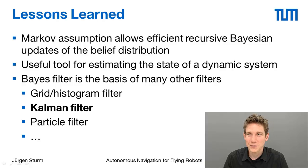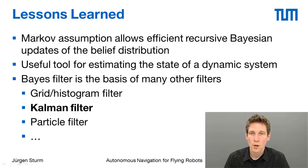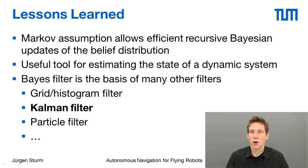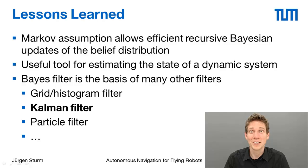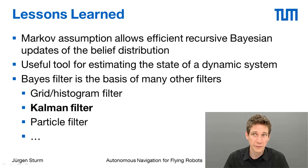To summarize: we have introduced the Markov assumption, which enables efficient recursive Bayesian updates on the belief distribution. It is a very useful tool for estimating the state of a dynamic system and forms the basis of many other filters — in particular the Kalman filter, which we will look at in the next video, but also the particle filter, hidden Markov models, dynamic Bayesian networks, and partially observable Markov decision processes, among many other tools in statistics.